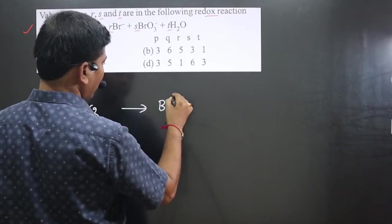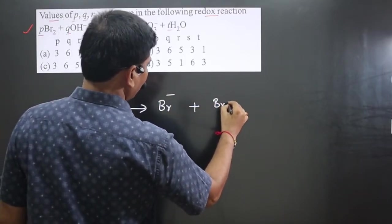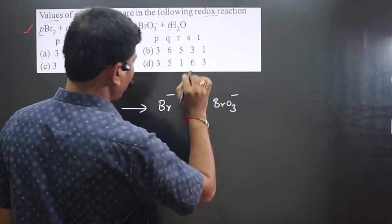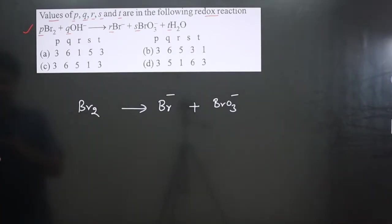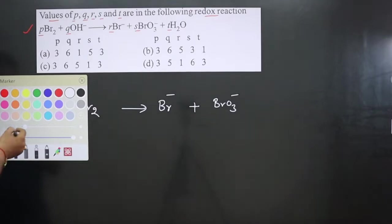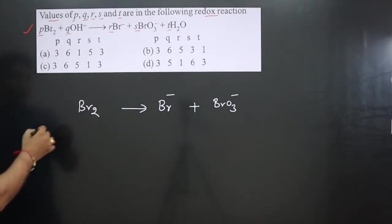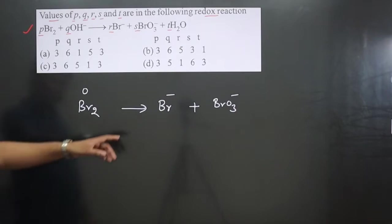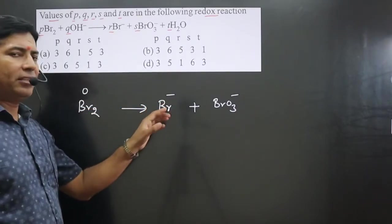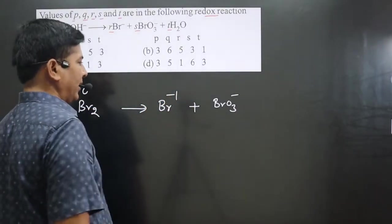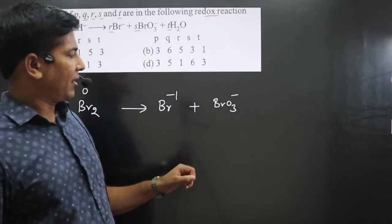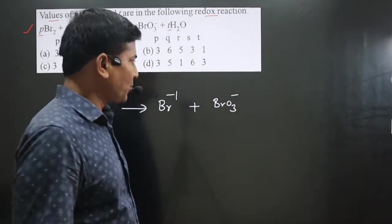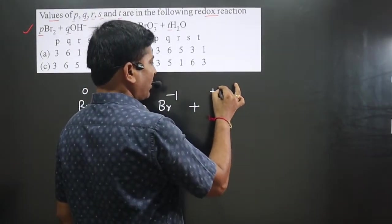We have the equation: Br₂ on the left side, and on the right side we have Br⁻ and then BrO₃⁻. Now we write down the oxidation numbers of the same elements on both sides. Br₂ is a neutral molecule — zero oxidation number. Br⁻ is a monoatomic ion — minus 1. BrO₃⁻ is a polyatomic ion; calculating for Br: 3 × (−2) = −6, so Br is plus 5 oxidation number.